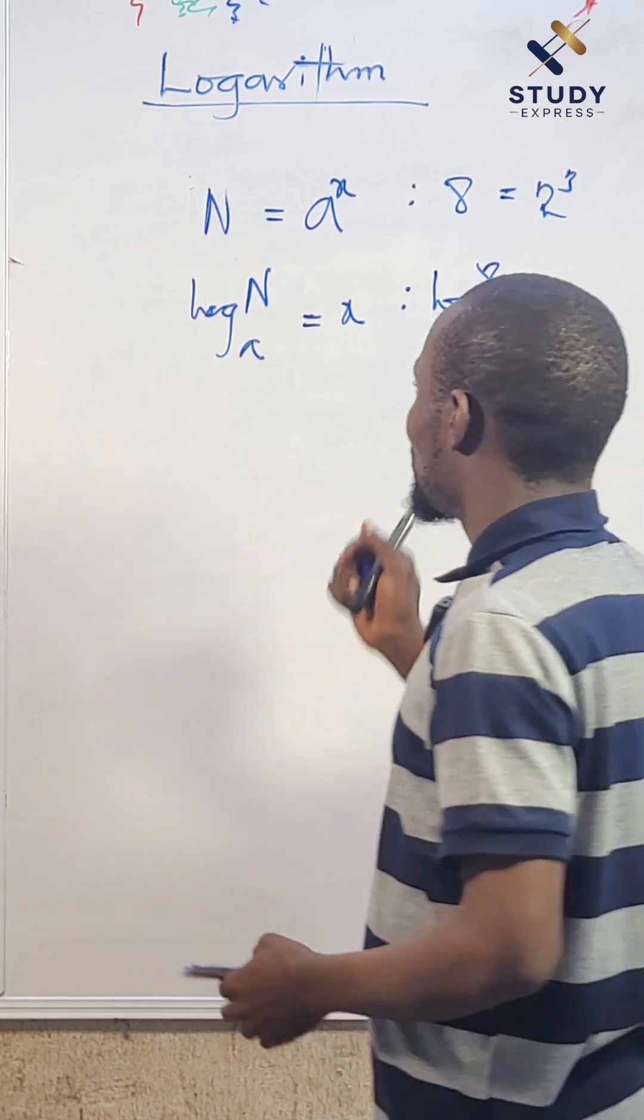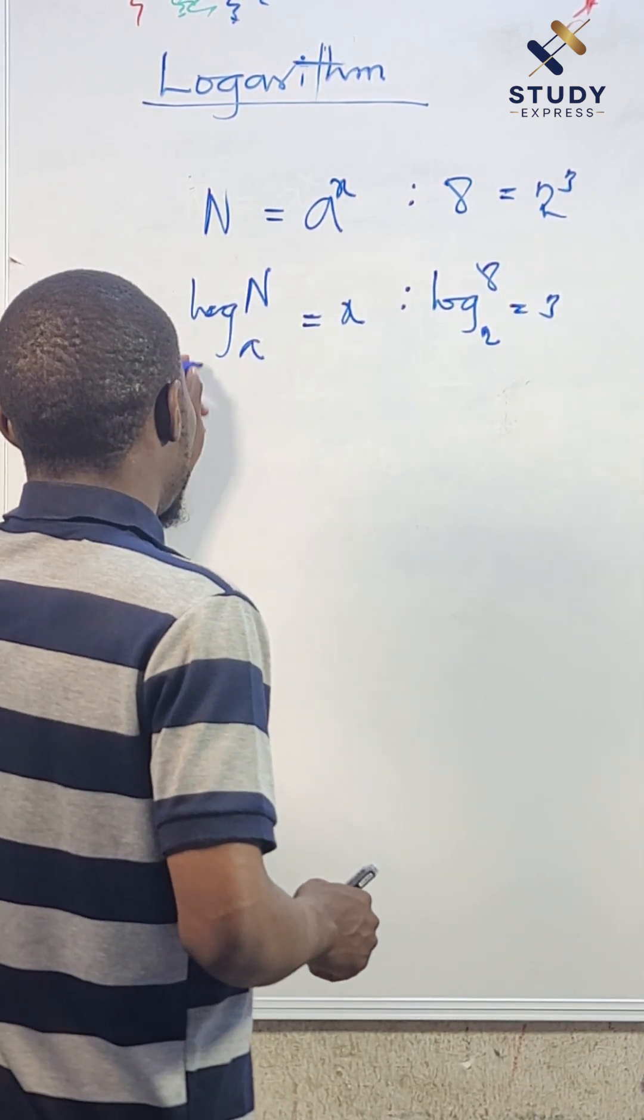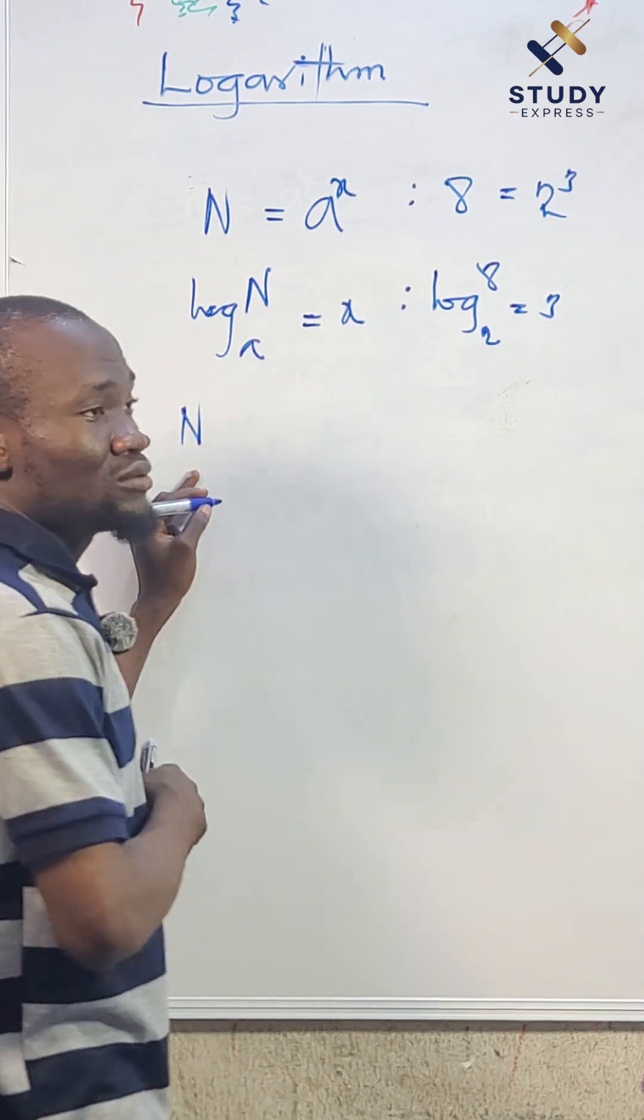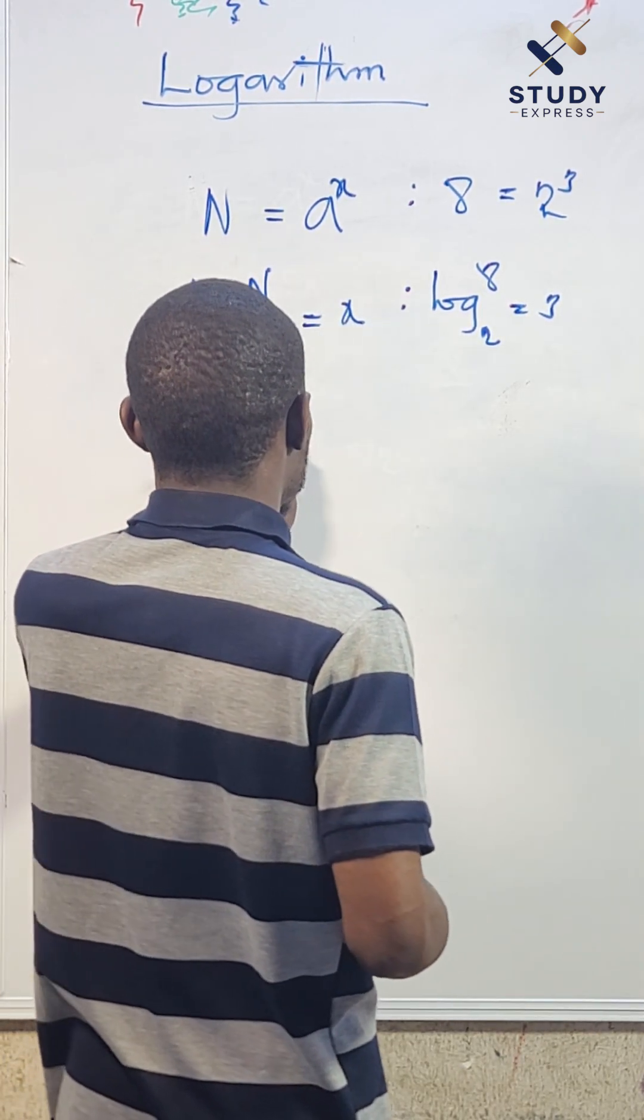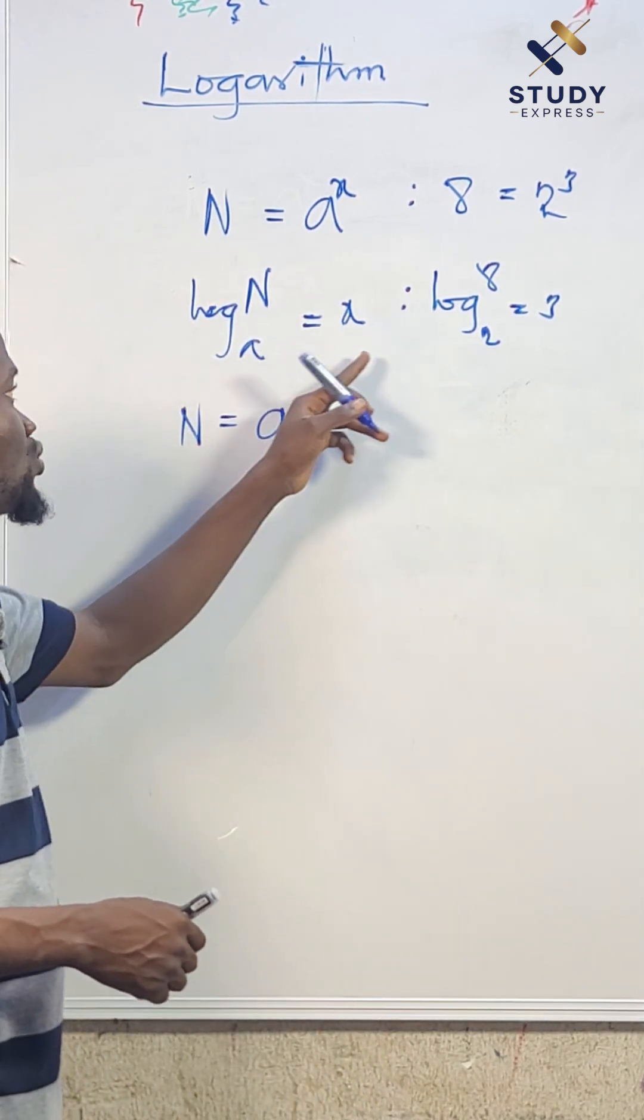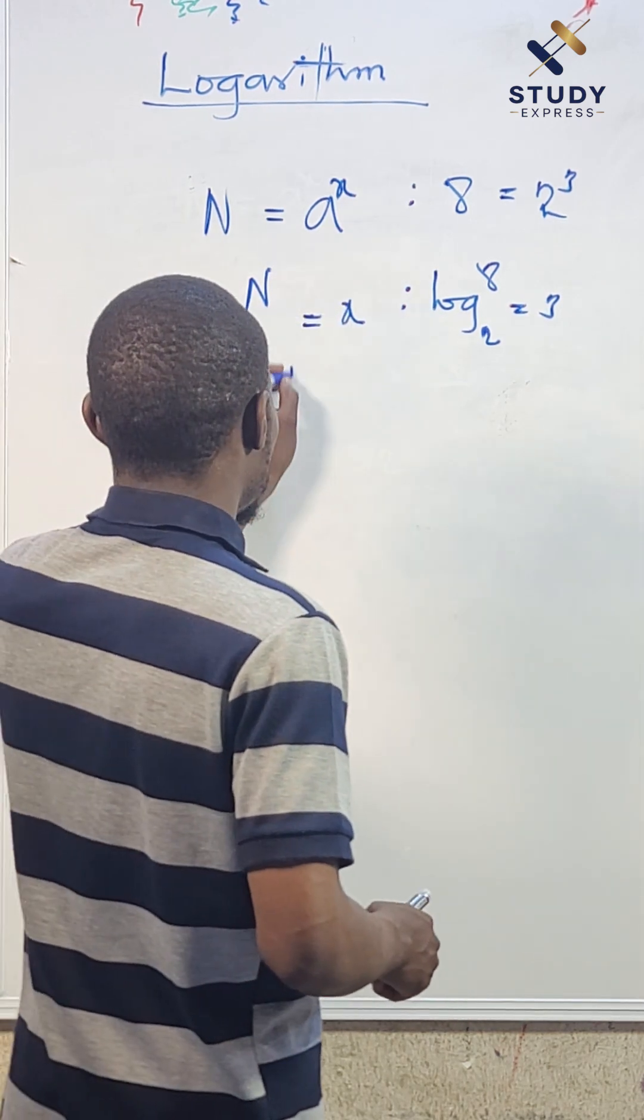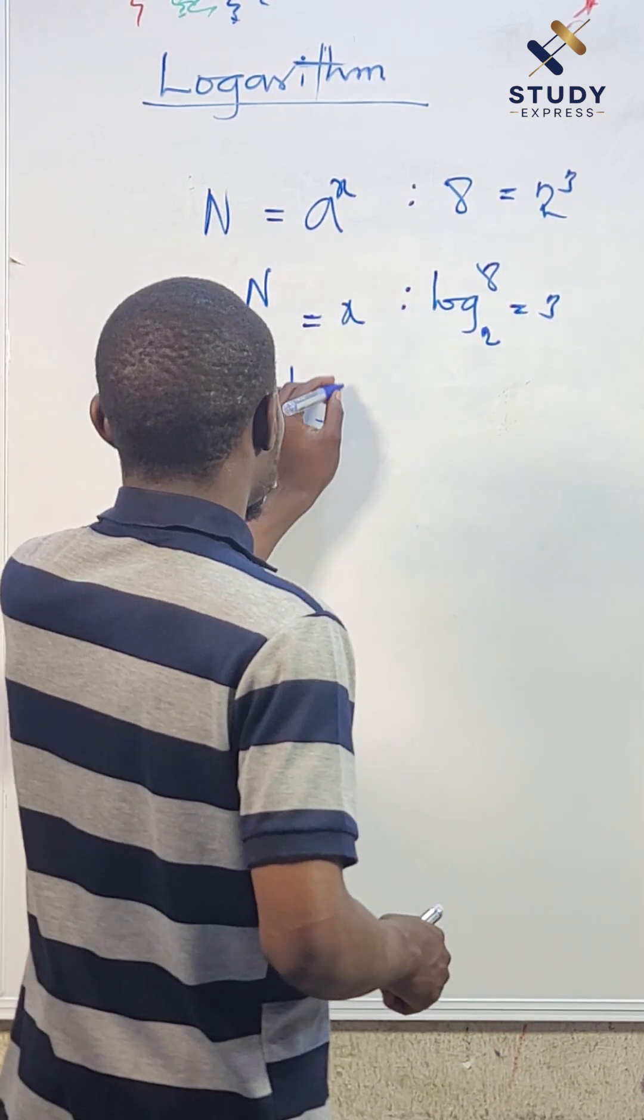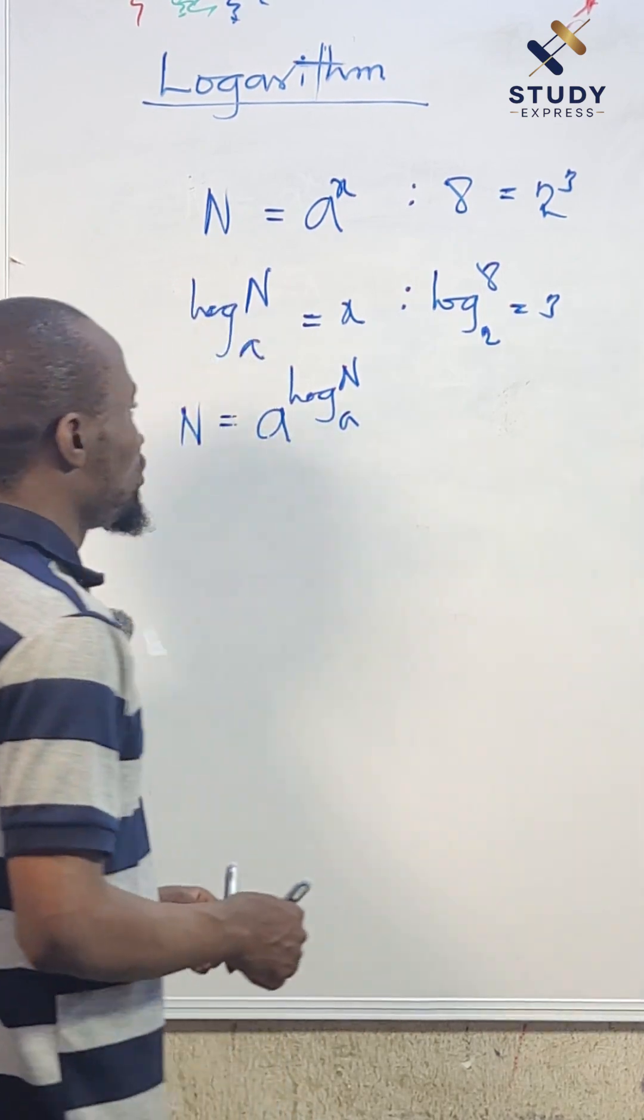If that is clear, let me repeat this. I'll show you that N is the number whose index is a to the x. Now let's write a raised to power x. Now express this x in logarithmic form: we have x is equal to log N base a. So let's replace that. Whenever we replace that, we have N base a.